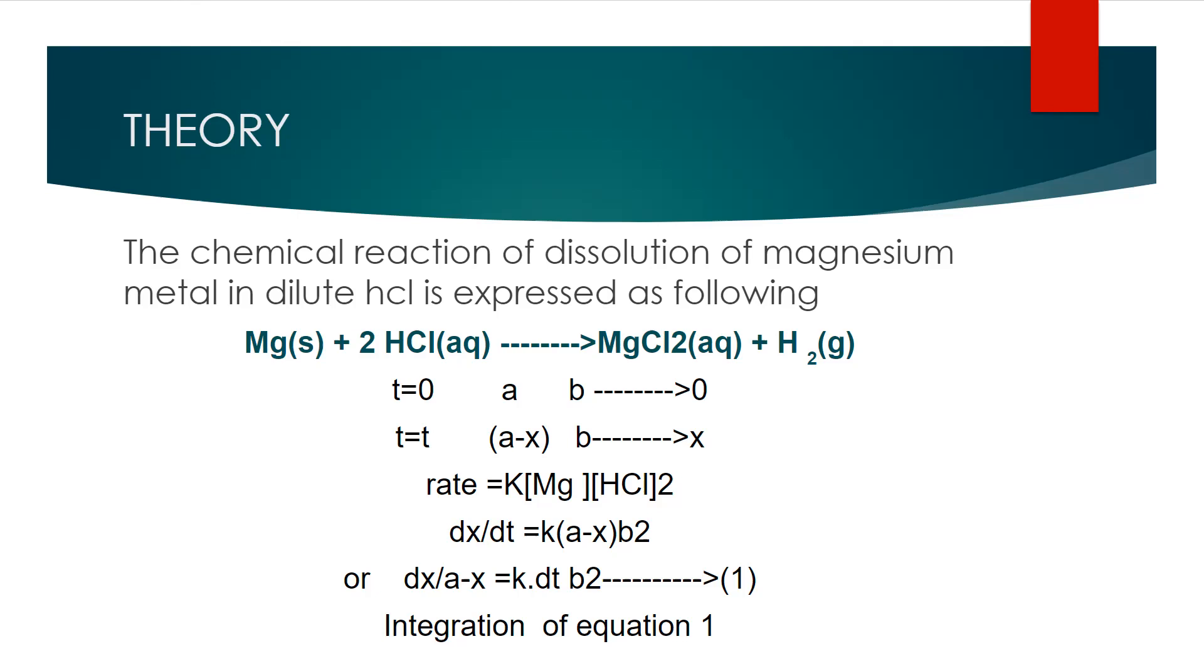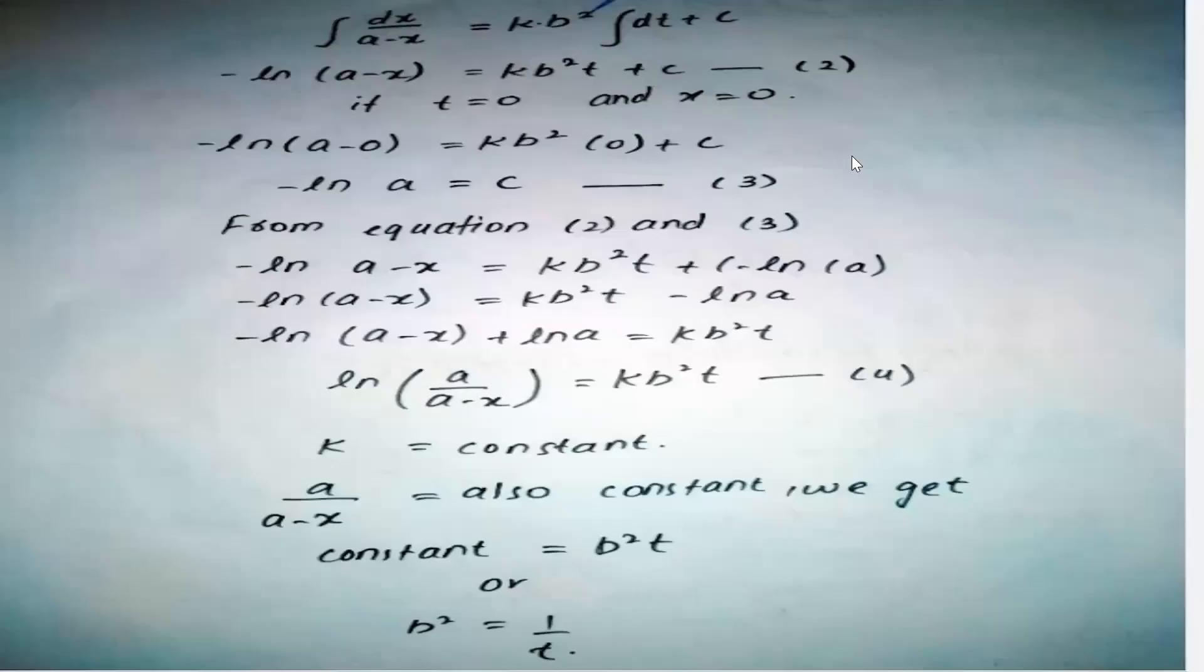Now by the integration of equation number one we will get equation number two: -ln(A-x) equals K[Mg]²t plus c. So if we put the value of t and x in equation number two we will get the value of c which is -ln(A) equals c.